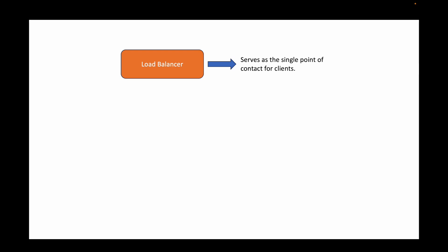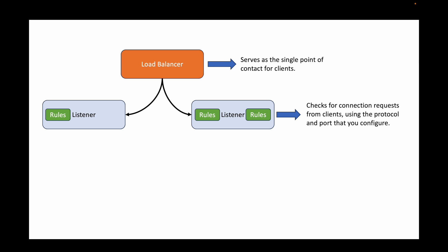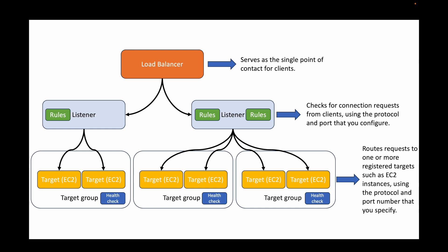This is essentially what your network load balancer is. Your load balancer acts as a single point of contact for clients. Listeners are your rules — they check for connection requests using the protocol and port you configure. For each listener you have target groups, where requests are routed using the protocol and port number specified. Each target group also has a health check to evaluate the health of your EC2 instances — only healthy instances receive traffic. That's the introduction to NLB and a hands-on example of how to work with it.